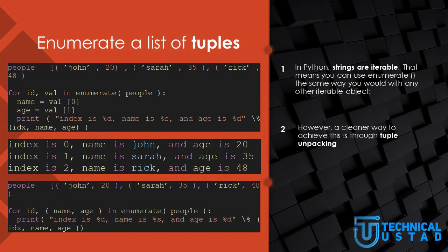Enumerate list of tuples: in this example, we create a list of tuples that contains name and age. The conventional way to enumerate the list is by using a for loop. We create an array called people where each element is a tuple containing the name and age of a person. Using a for loop to iterate over the Enumerate object from the people list, in every iteration, id and val are assigned the index and value respectively. The val variable is a tuple, and to access its elements we use brackets — val[0] is the name and val[1] is the age.